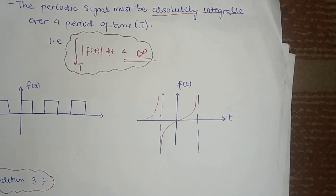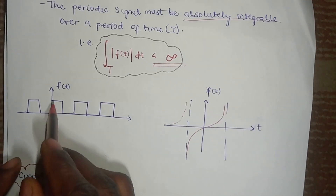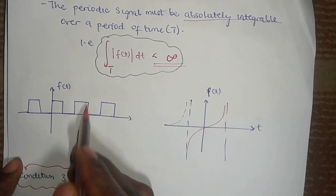This periodic signal, if you can integrate it and look at the area over a range of period of time, then we can say it satisfies the second condition. But looking at this complex function, it does not follow this path — at some point it is not absolutely integrable over a period of time; it tends to infinity. Any signal we're dealing with should have a finite defined pattern over a range and repeat itself.